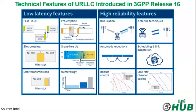Regarding the technical features of ultra-reliable low-latency communication, low-latency capabilities already exist in Release 15, but Release 16 is the first iteration in which scheduling efficiency and network capacity are fully satisfied. This figure from Intel illustrates a summary of Release 16 improvements introduced by fast HARQ, pre-emption, slot crossing, and grant-free uplink. We will discuss one of these features now.